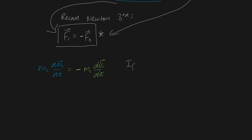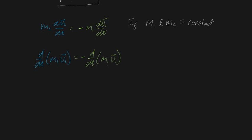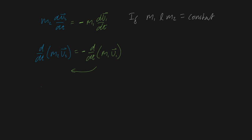If it's true that masses m1 and m2 remain constant — in other words, no chunks of mass are falling off during collision — that means we can bring these scalars inside the differential sign. We can rewrite the left-hand side as d/dt of (m2 v2), and the right-hand side as minus d/dt of (m1 v1). Now let me bring the green expression over to the left-hand side.